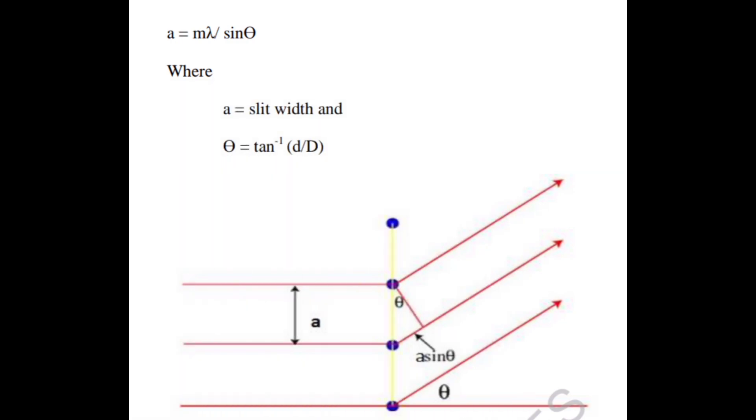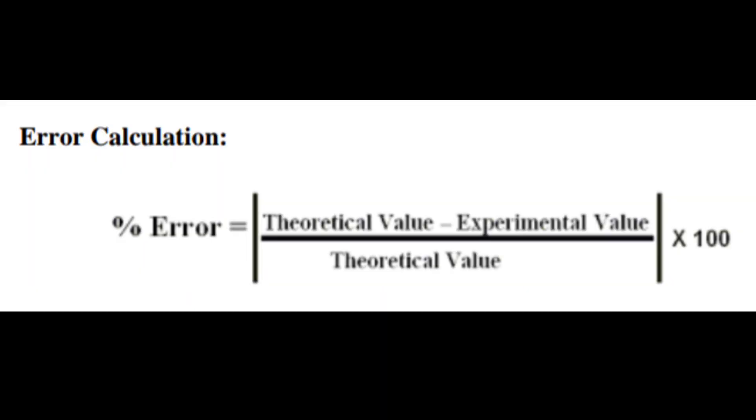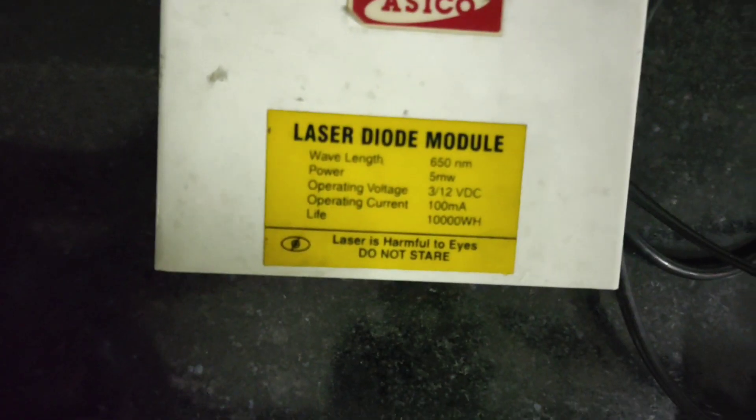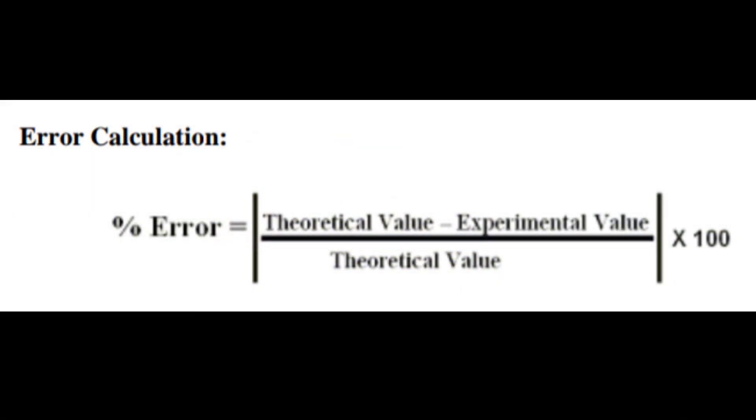Finally to calculate the percentage error we use the formula as shown here. We use the theoretical value which is provided in our setup - the laser diode module has a wavelength of 650 nanometers. For experimental value we use the average of all the lambdas that we have calculated for different positions of the grating and optical screen, and use the average value for calculating the percentage error.